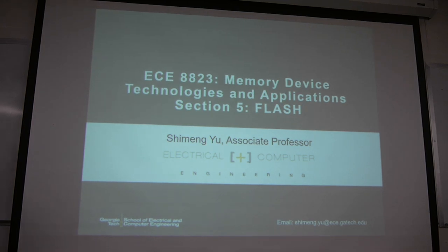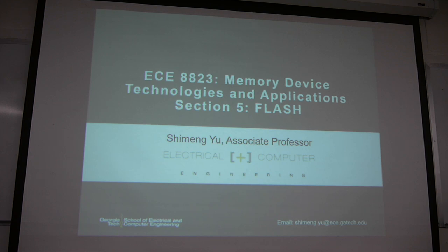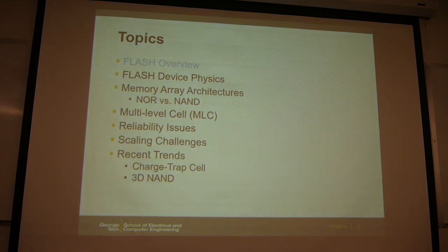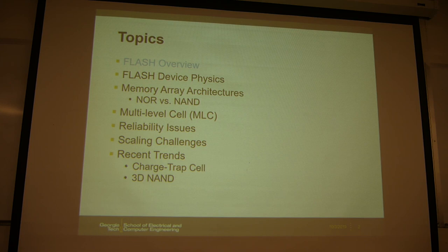Today we are going to cover a new section on flash memory, which is a non-volatile memory. It's different from SRAM and DRAM because it can store data even after the power supply is turned off. The outline covers: an overview of the technology, device physics of flash, two array architectures (NOR and NAND), multi-level cell, reliability issues, scaling challenges, and recent trends like the charge trap cell and 3D NAND.